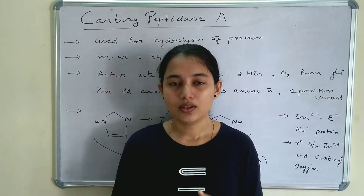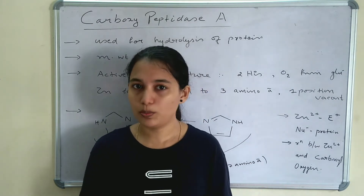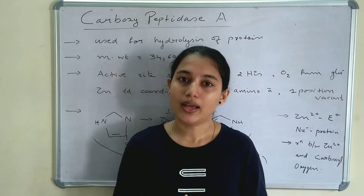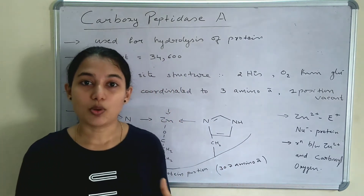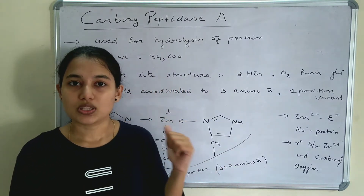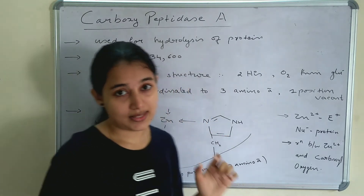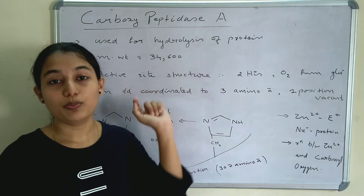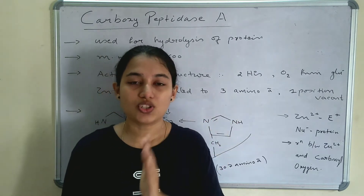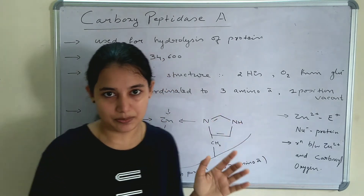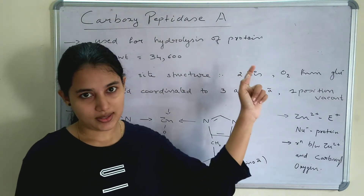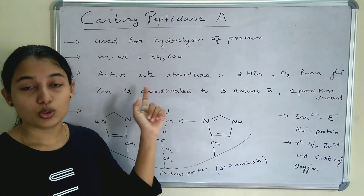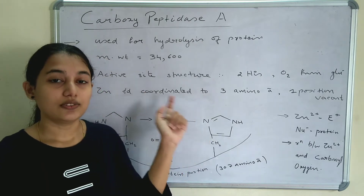Both of these enzymes contain zinc as the metal atom in the +2 oxidation state. Carboxypeptidase A is a zinc metalloenzyme whose function is the hydrolysis of a protein chain — mainly the C-terminal will be hydrolyzed. The molecular weight of carboxypeptidase A is 34,600.